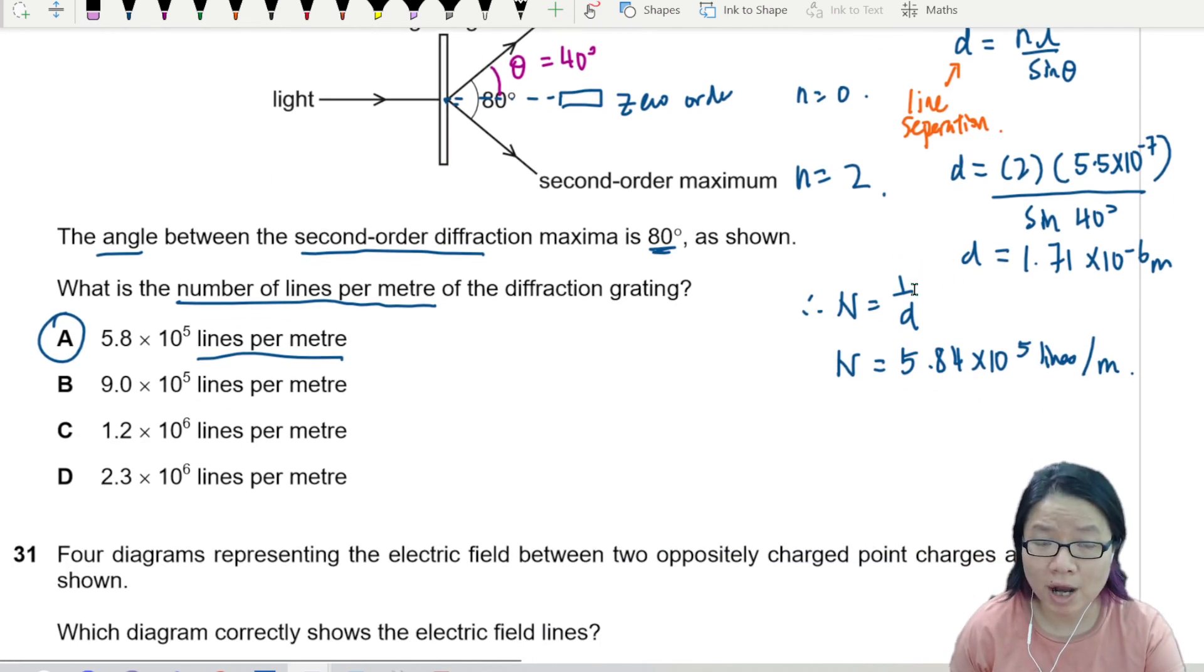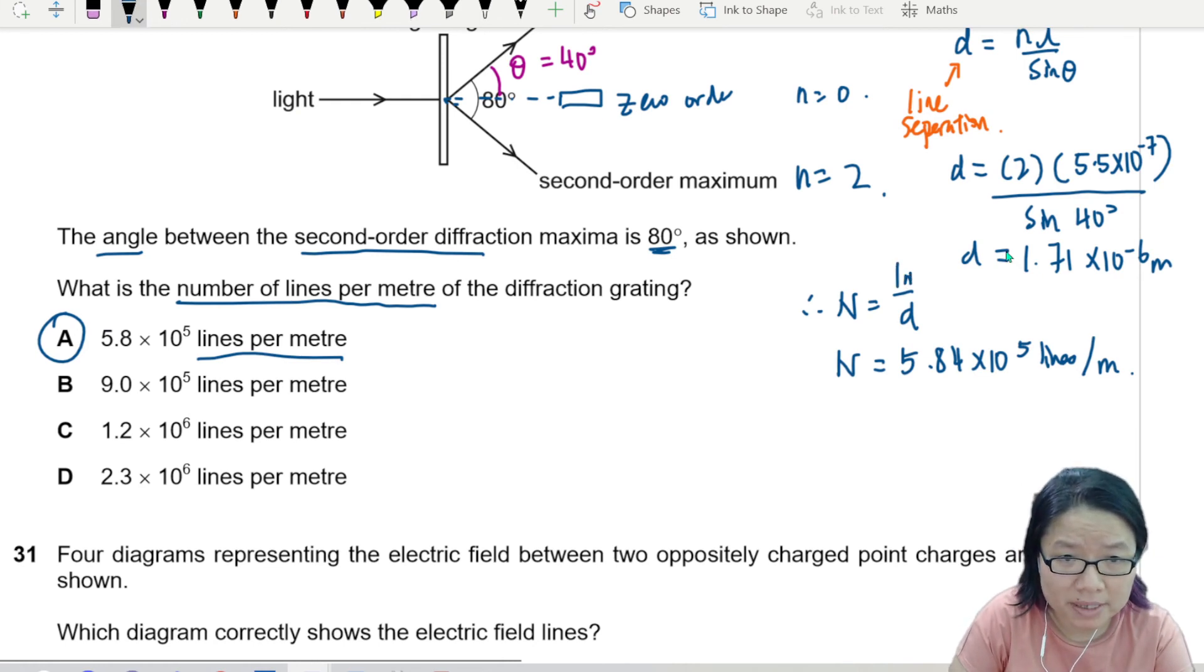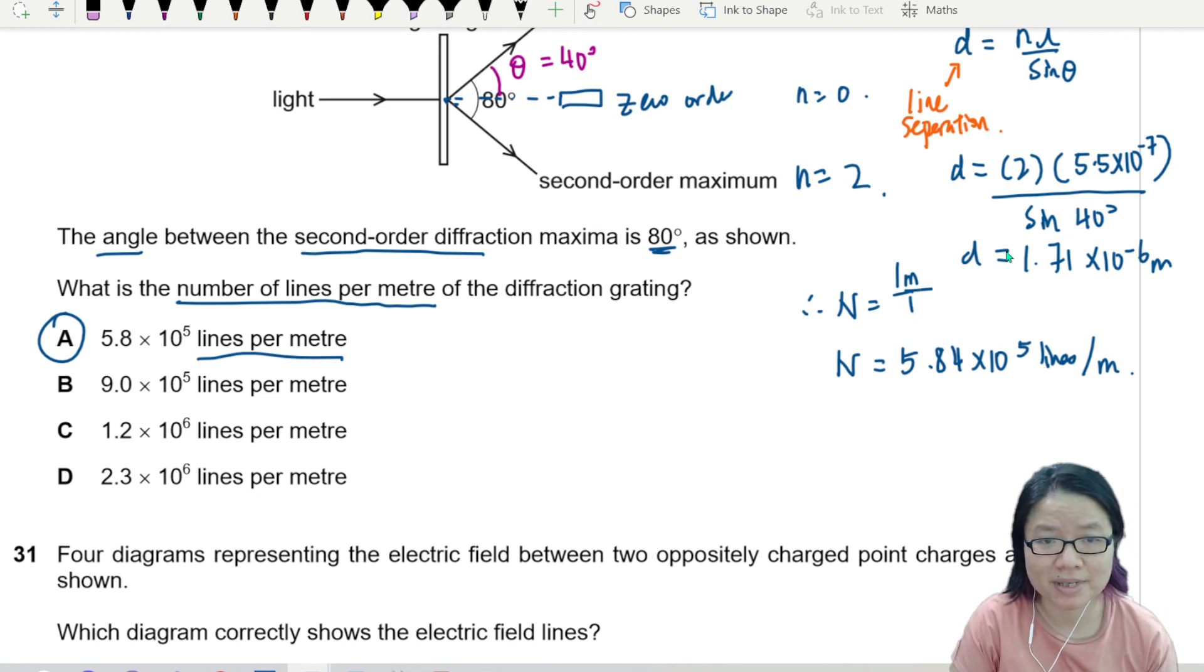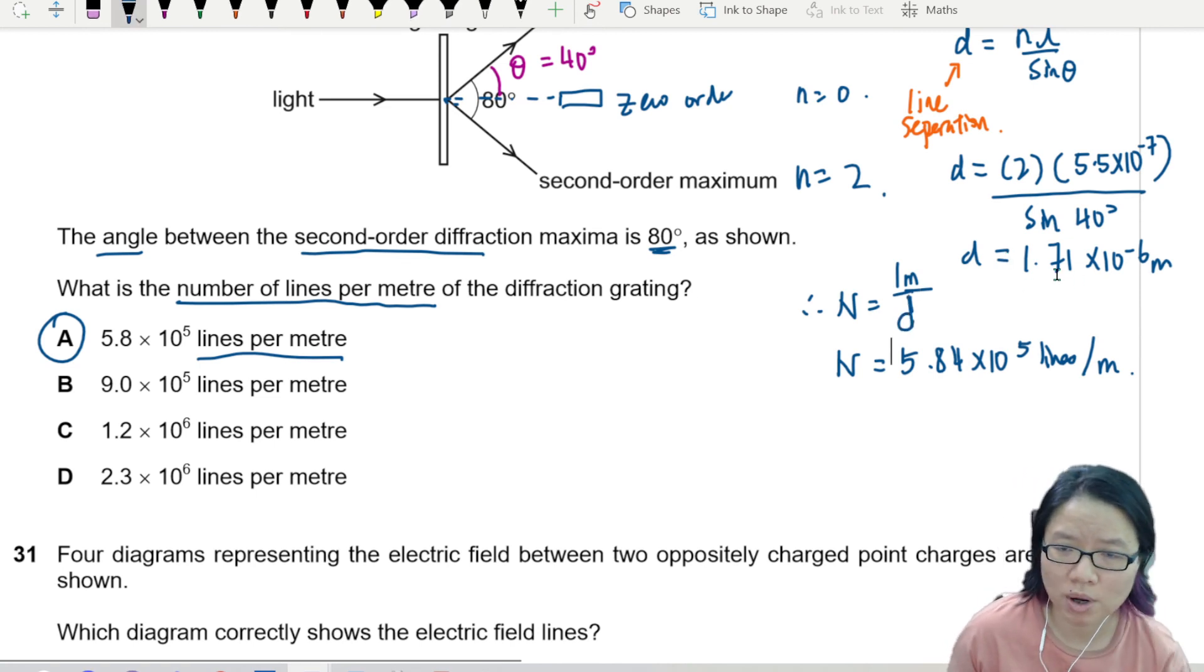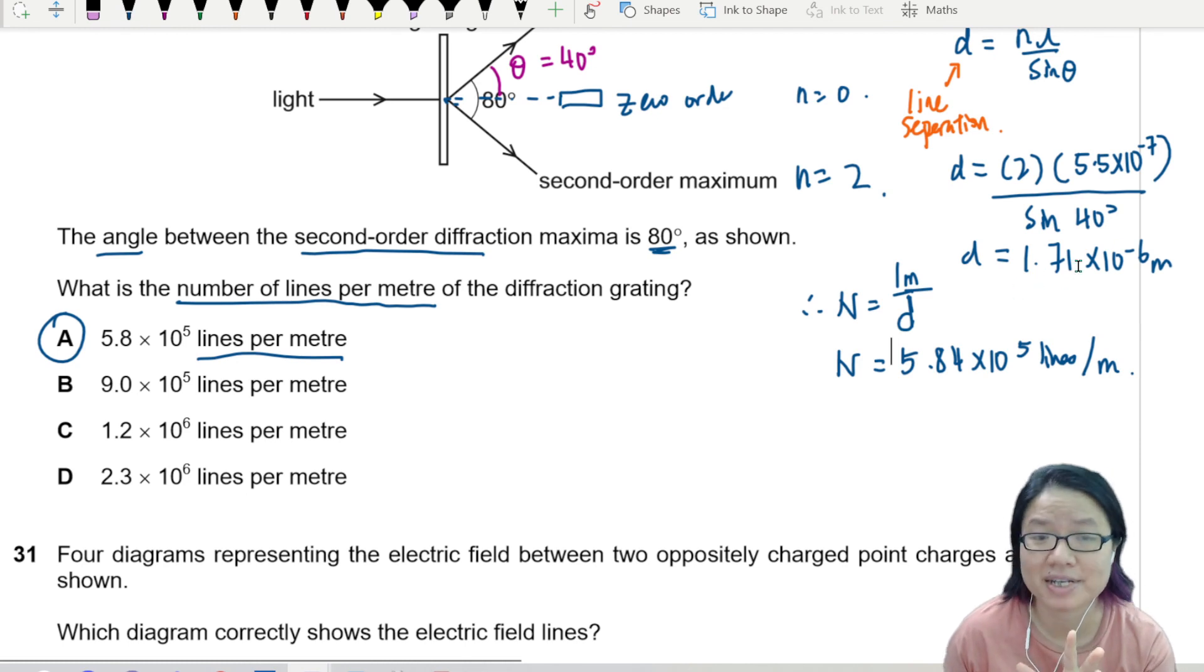To find out how - 1 meter, this 1 here stands for 1 meter. 1 meter can fit how many? It's a bit like 1 line gap is 1.71 × 10^-6. So 1 meter can fit how many lines? You divide though.